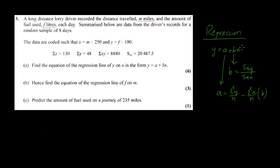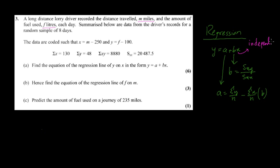It's important to remember that they don't always use the symbols x and y. The x is called the independent variable, sometimes also called the explanatory variable, and y is called the dependent variable. Whenever we talk about regression, we are talking about a mathematical equation, often called the regression line or linear regression.